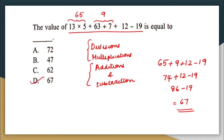Important: do not add 65 and 63 first and then divide by 7 — that will give the wrong answer. Always do divisions and multiplications first, then additions and subtractions. The correct answer is option D, 67.